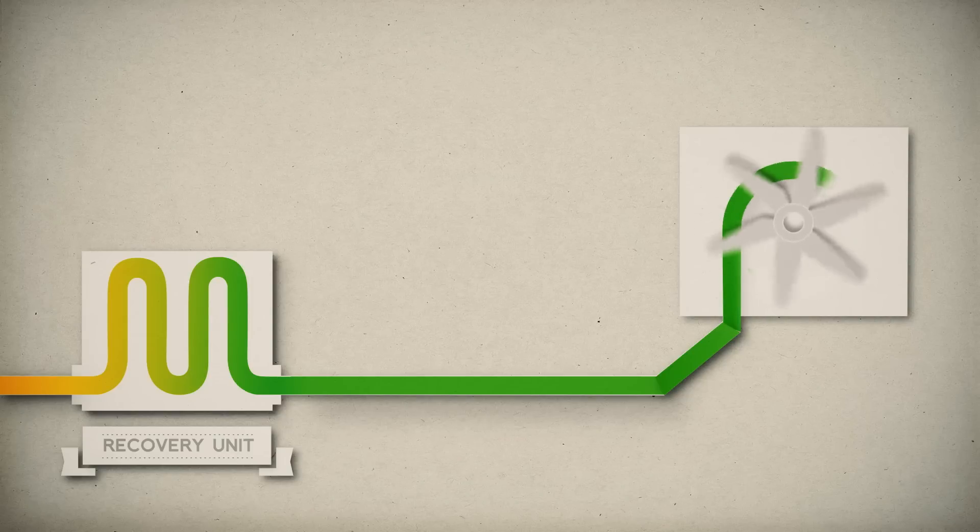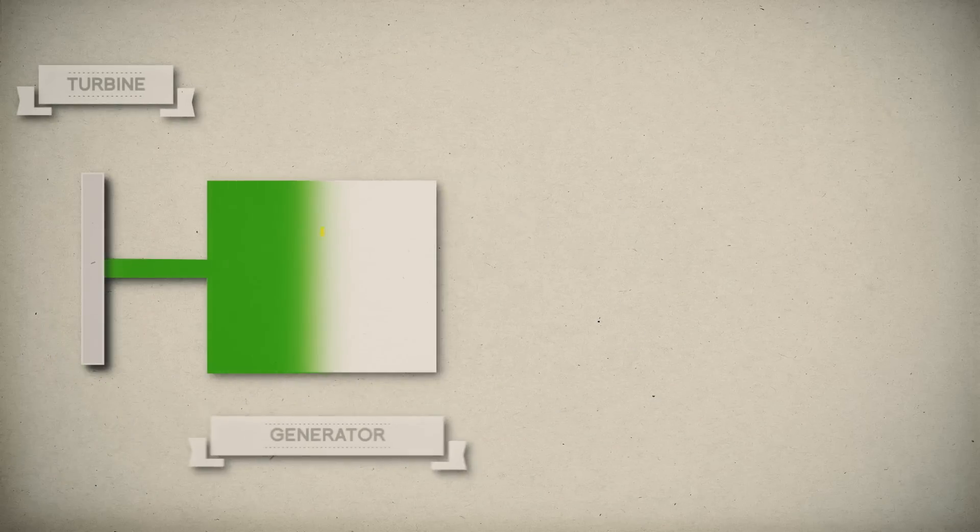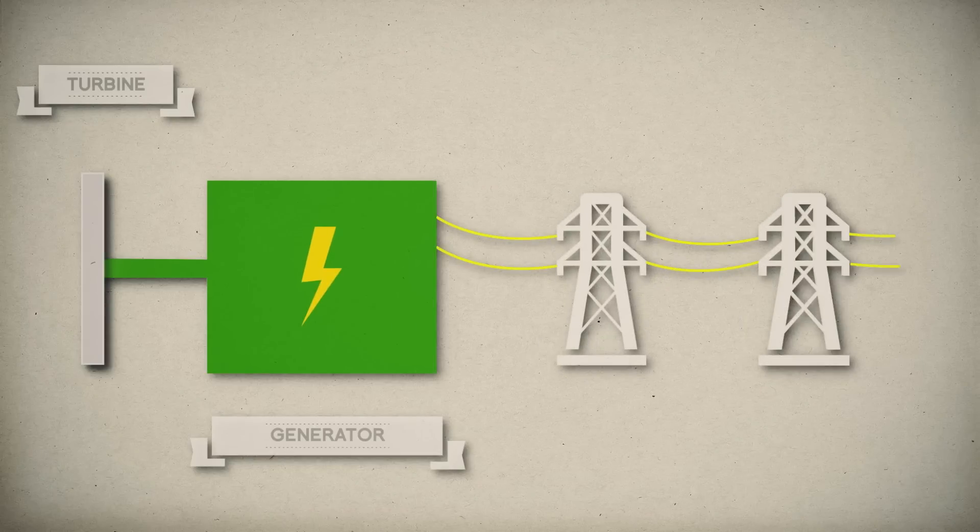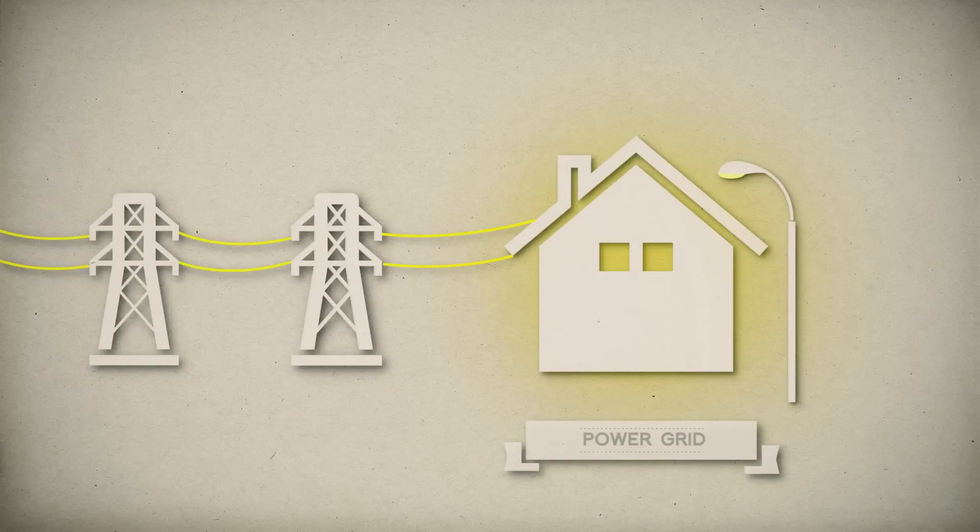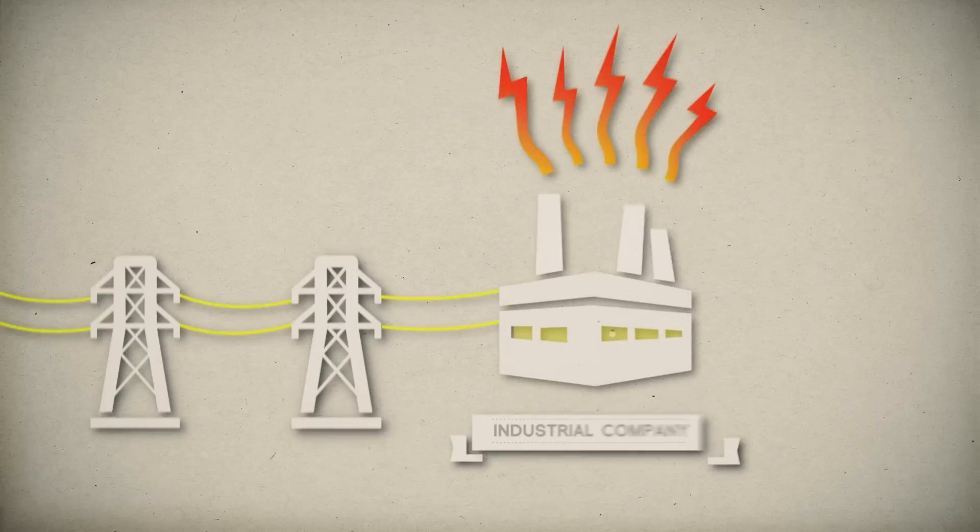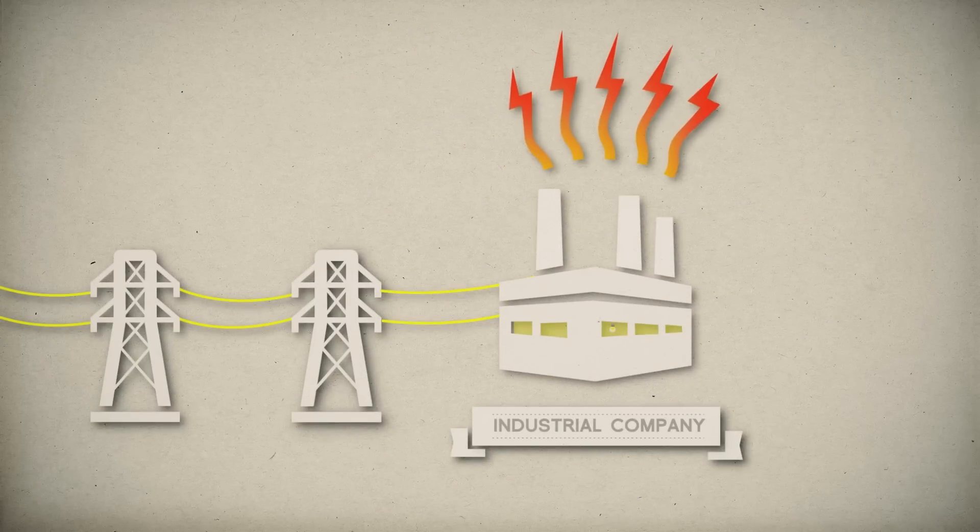Through heat exchange, heat can be captured and used to drive a turbine and generator which creates electricity. This electricity can be sold to the power grid, or returned to the industrial company to reduce fuel and power purchases, as well as emissions.